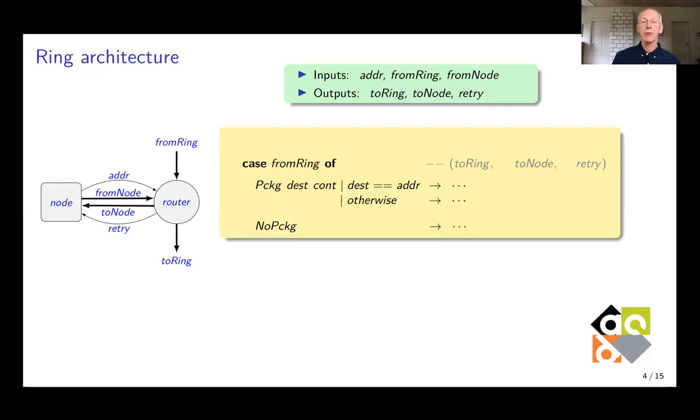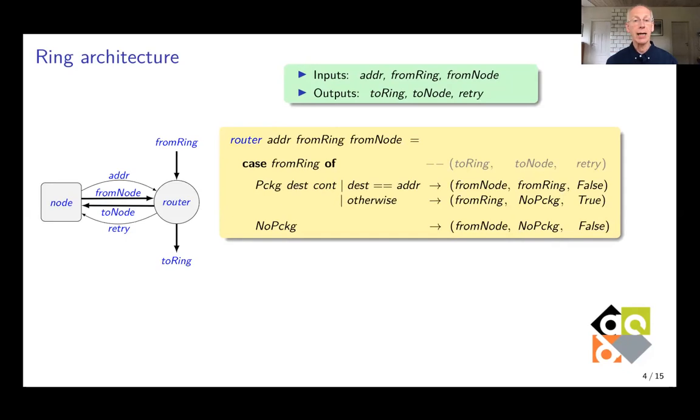And in the other cases, well, then you have to fill in the three values for what goes to the ring, what goes to the node and the value of the boolean variable retry. Where I will indicate which is which by commands in the top line. And if the address and the destination are already the same, then you have to send to the node what comes from the ring. You can send what comes from the node to the ring and you can tell that the node does not have to retry the sending. So in order to finalize this definition, we turn it into a function which gets the address as a first argument so that you can use it in the case expression. Second argument is the package that comes from the ring and the third the package that comes from the node. Note that arguments are separated by spaces rather than by commas.